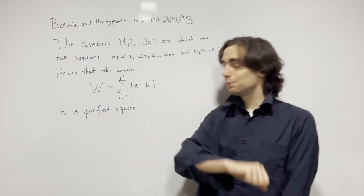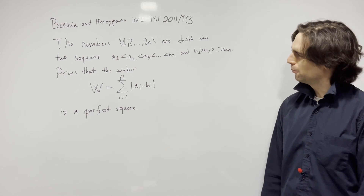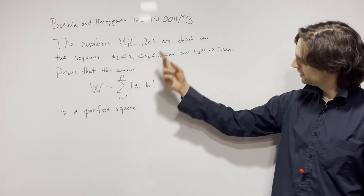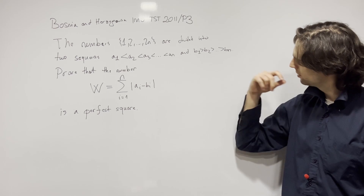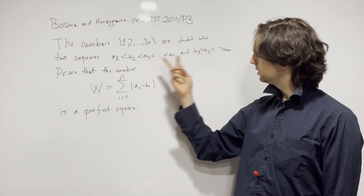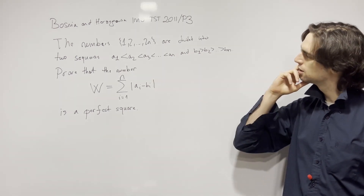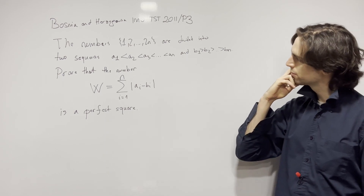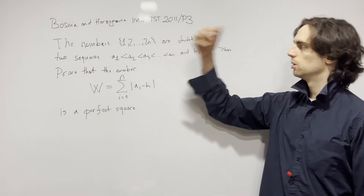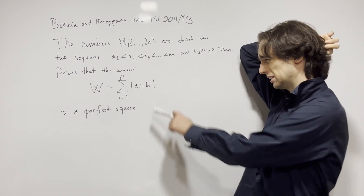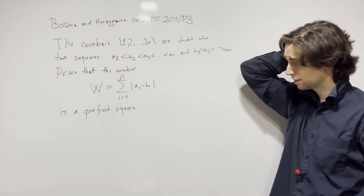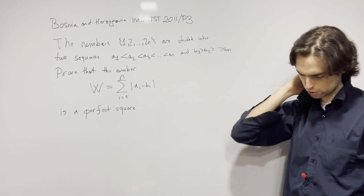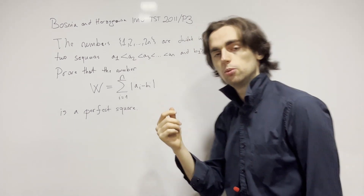Without further ado, let's begin. So what do we have here? These are distinct numbers put into two sequences. The numbers form 1 through 2n, and we must show that W is always a perfect square.